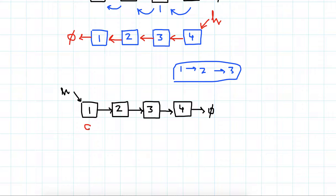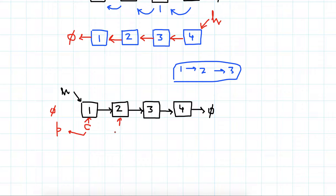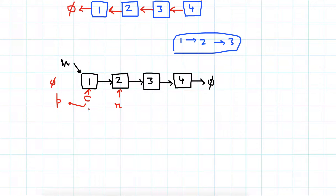We'll do exactly that. Let's initialize: we have a current node and we keep a previous node, because we want to set the next of the current node to the previous node. Initially there is no node before the first one, so previous will be null, and we initialize current with the head node. We also keep track of a next node.